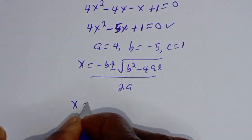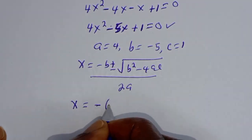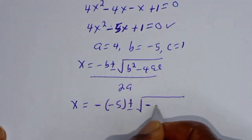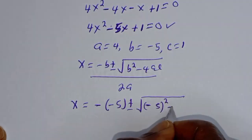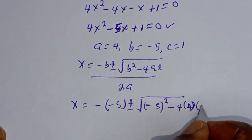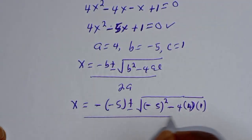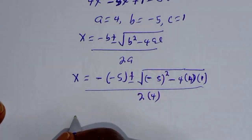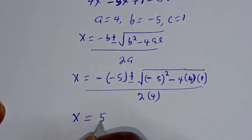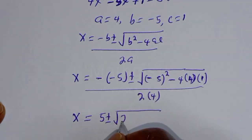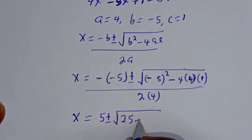So s is equal to minus bracket minus 5, plus or minus square root of minus 5 squared minus 4 multiplied by 4 multiplied by 1, over 2 multiplied by 4. That gives s is equal to 5 plus or minus square root of 25 minus 16, over 8.